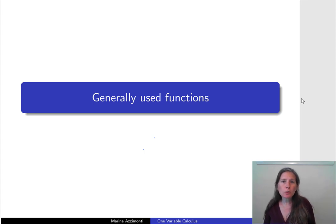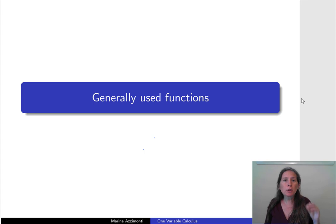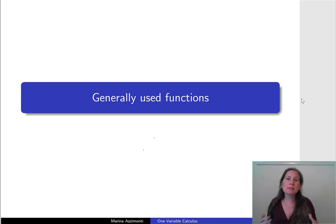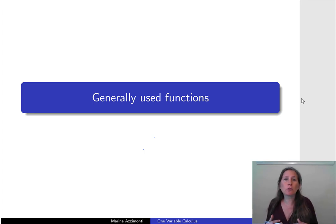We are back in the second module of our ECO 590 Math Camp for Economics at Stony Brook University. In this sub-module, I want to discuss some of the properties of functions that we typically use in economics. This will come in handy when you are solving problems or specifying an environment, because you will typically have either an objective function or a budget set, and these are going to fall into either a linear function, a quadratic function, a polynomial, a logarithmic function, etc.